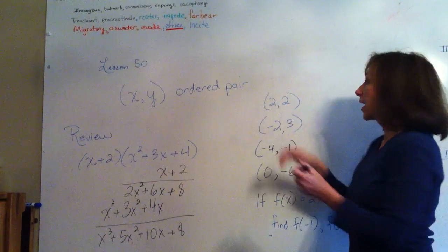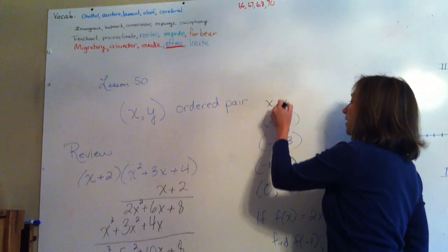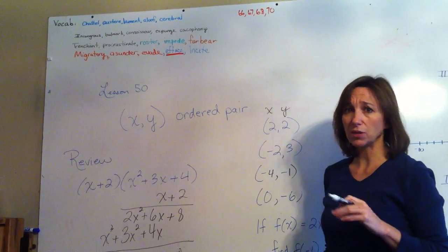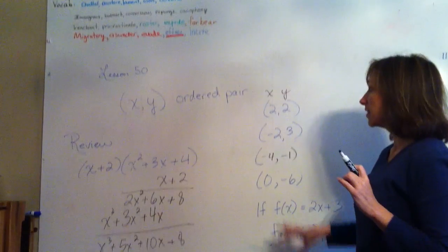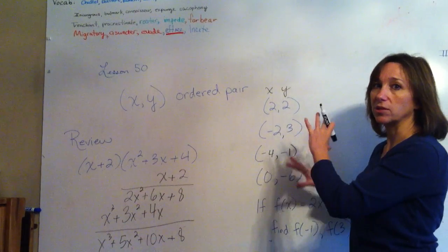They go x, y. x always comes first in the ordered pair and then y. So we're just going to talk about the coordinate system a little bit and how to plot these ordered pairs. And then later we'll put meaning to what we're doing.